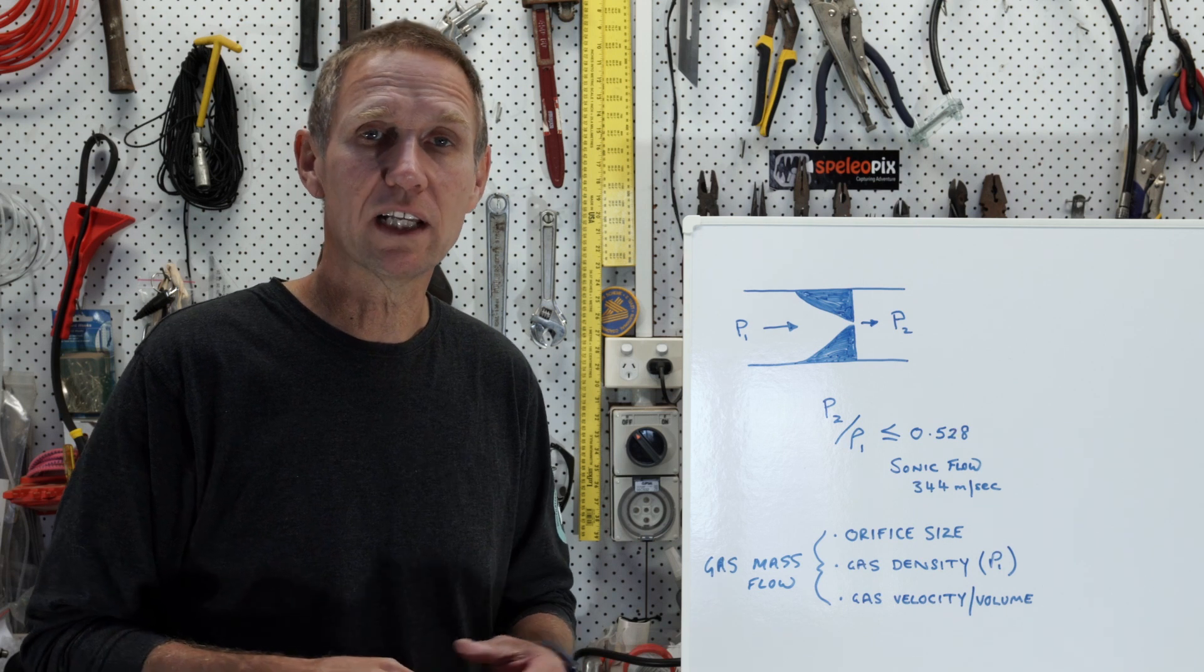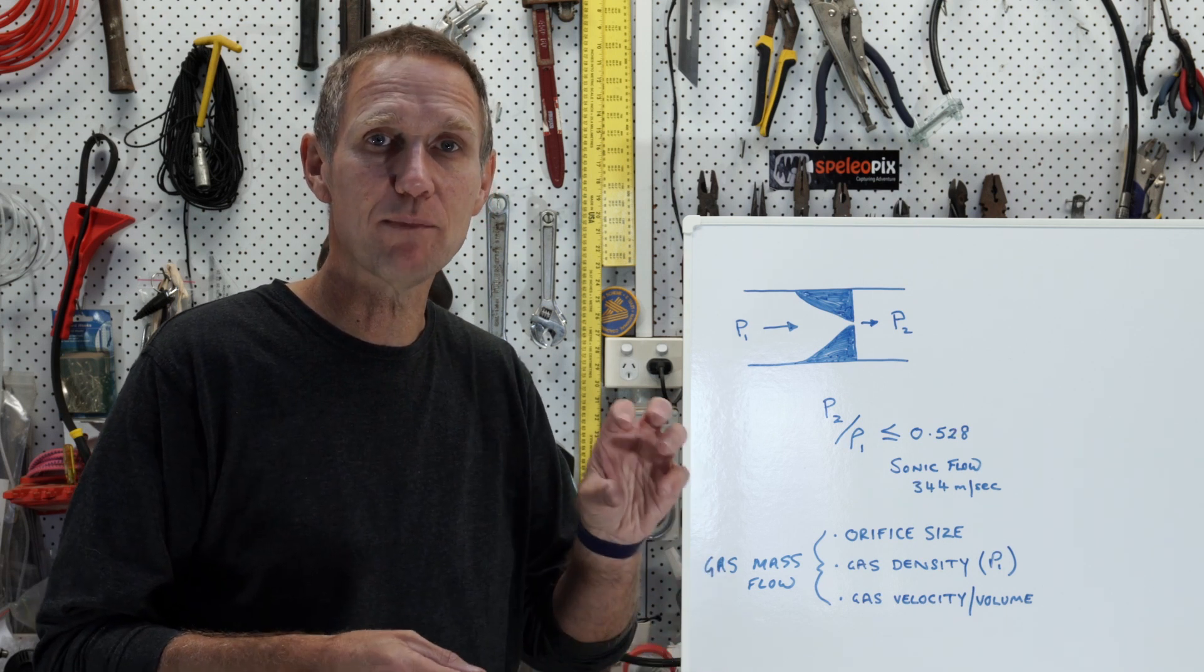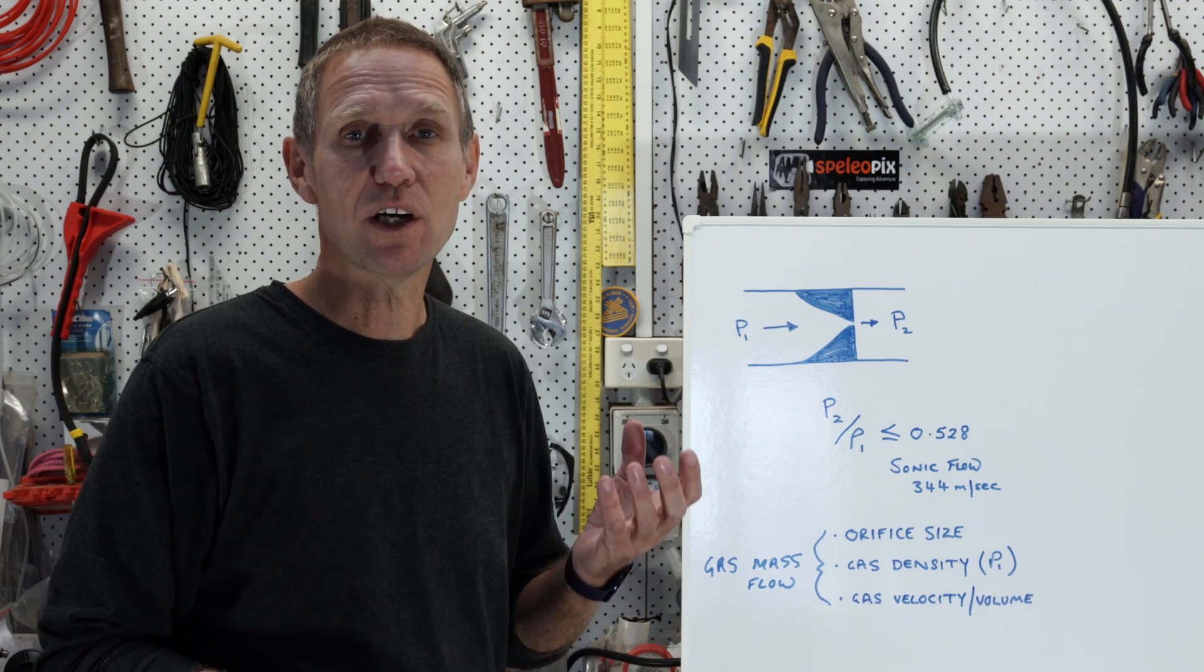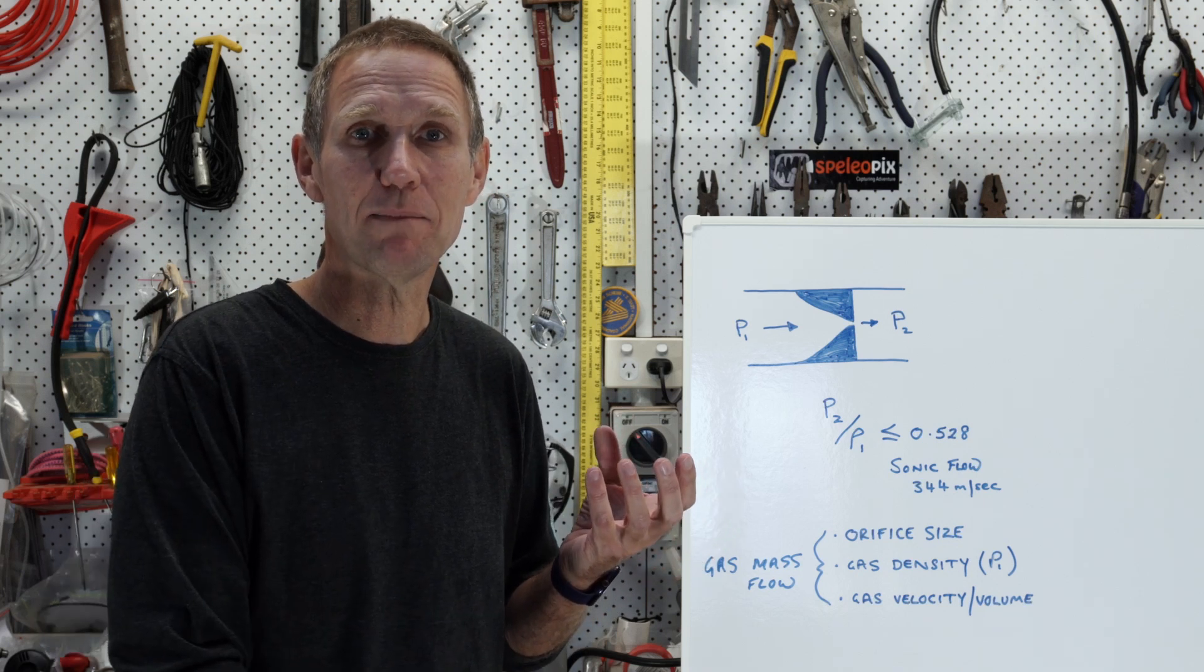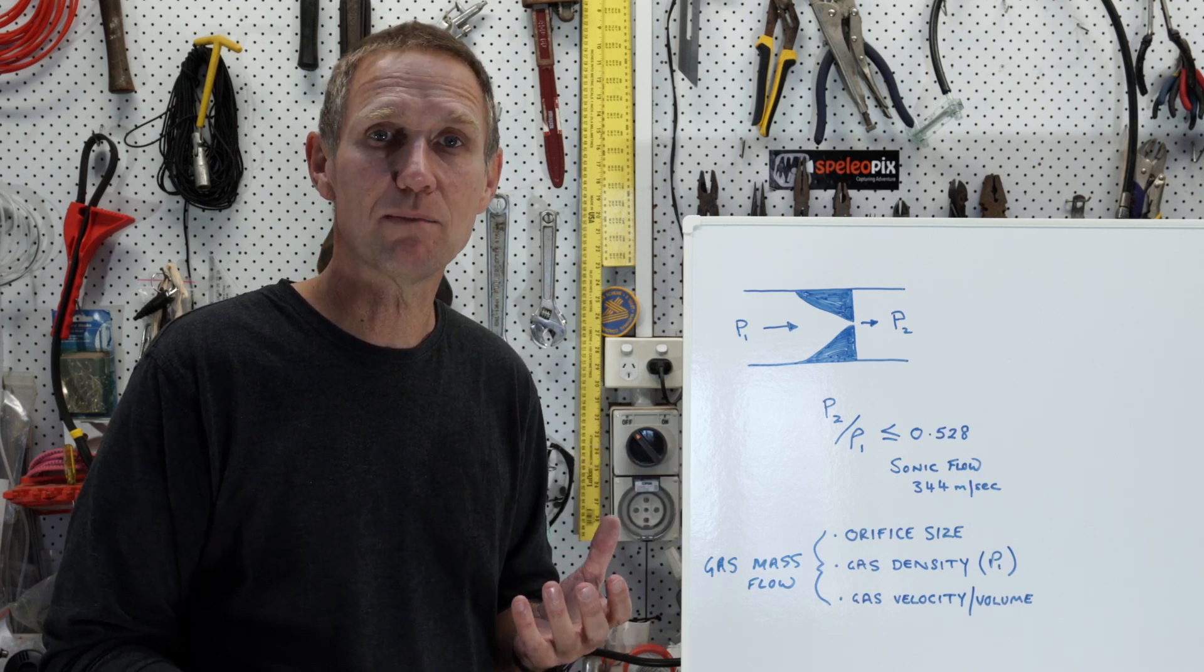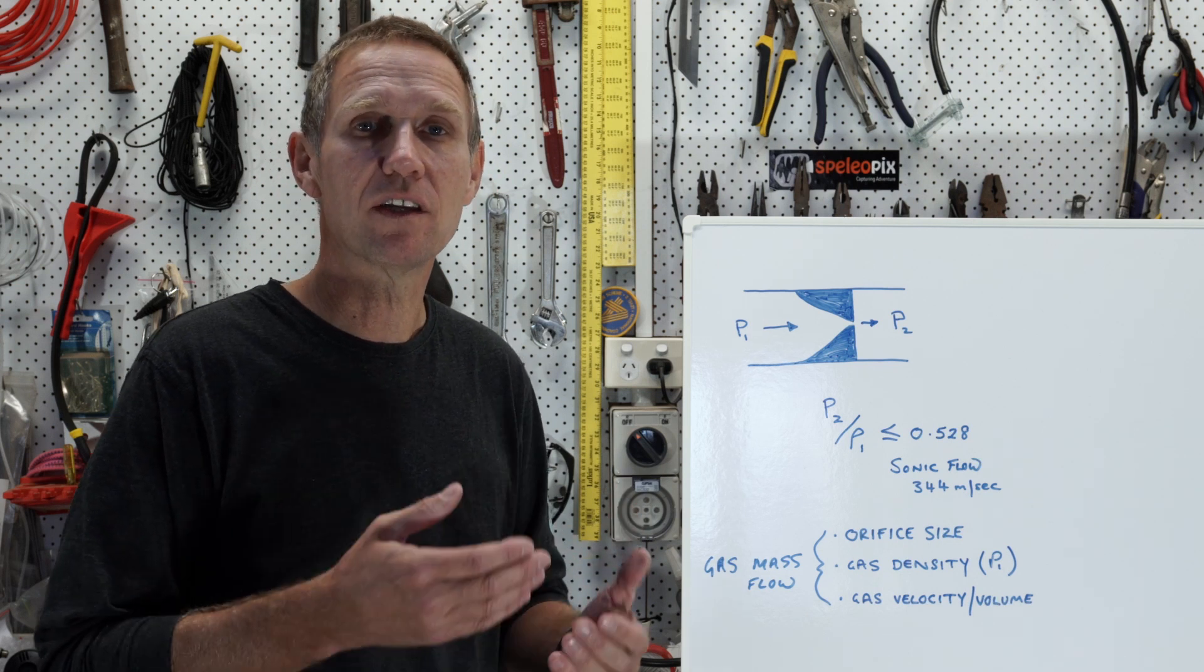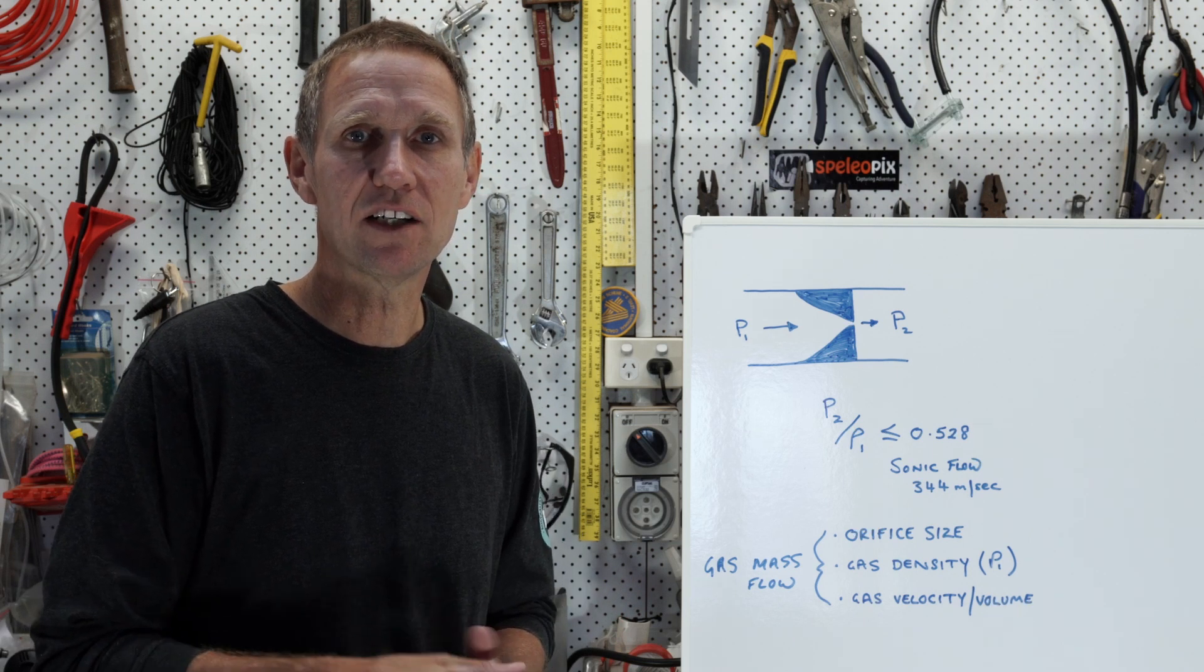So what a normal regulator does in fact is adds, by a compensating mechanism, adds an extra bar to the intermediate pressure. So as we go from the surface, 10 bar intermediate pressure, down to 10 meters, an extra bar of depth if you like, the regulator will compensate by increasing the intermediate pressure to 11 bar. So the regulator is always working to supply gas in an easy way to you.